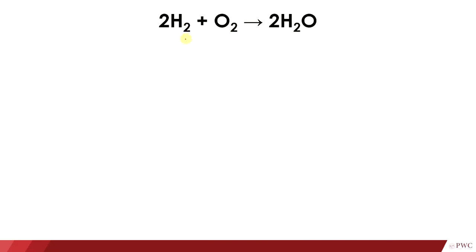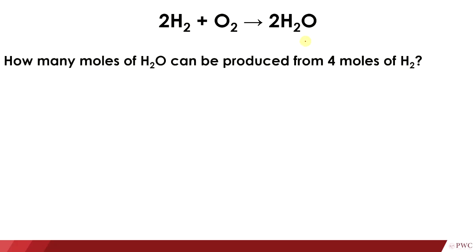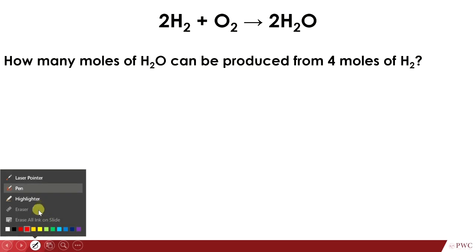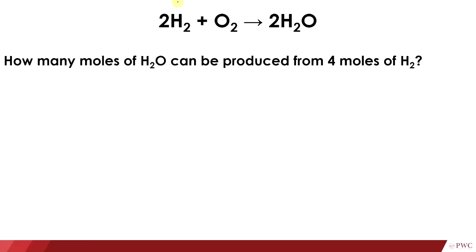Now, for the reaction 2H₂ + O₂ producing 2H₂O, let's check again our balanced chemical equation. The ratio here is 2:1:2, so for every 2 H₂, I need 1 O₂, and that can produce 2 H₂O. This is the ratio between the different substances in this reaction.